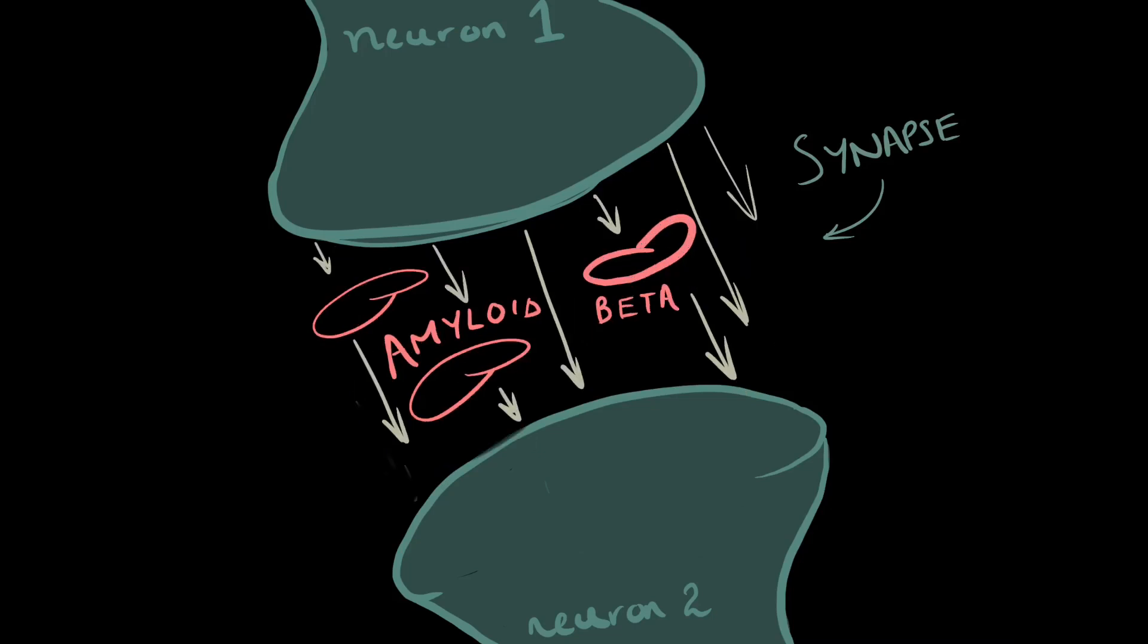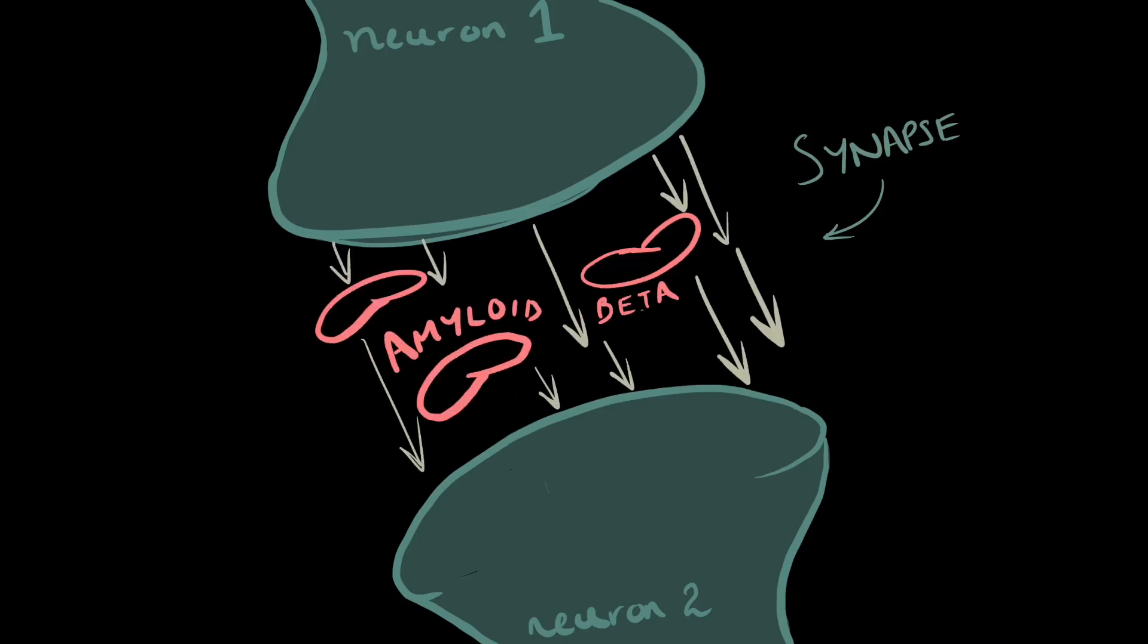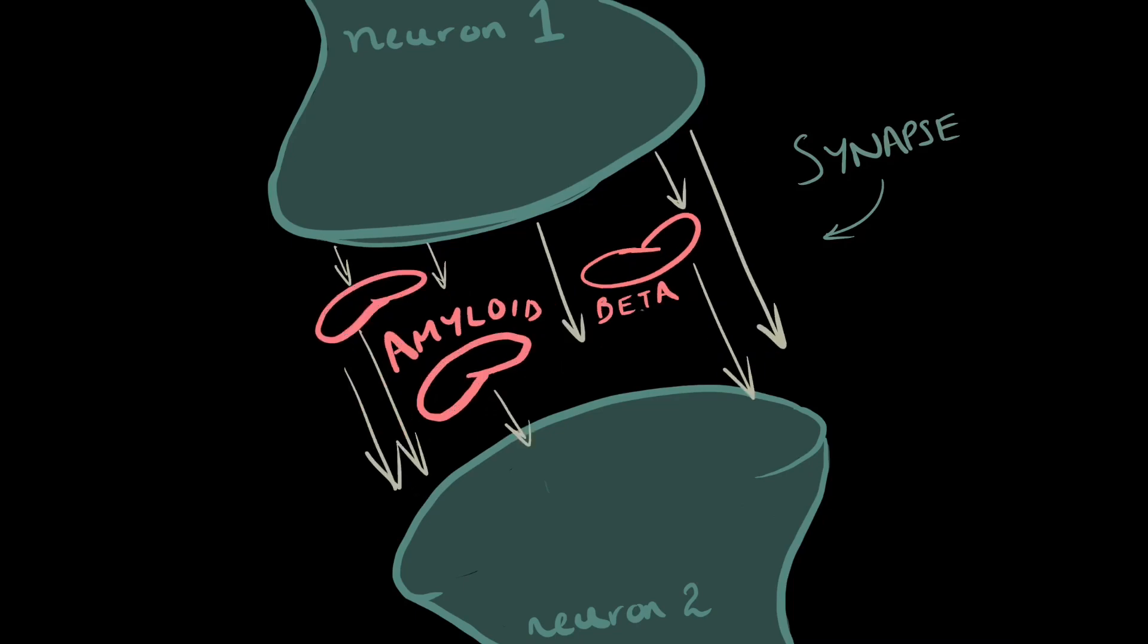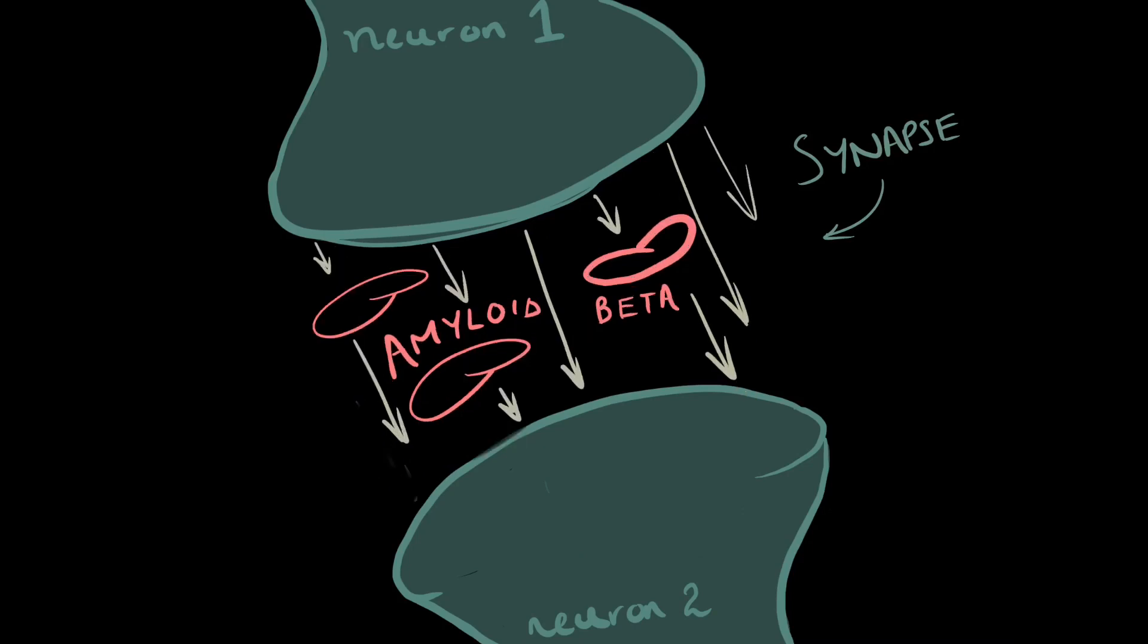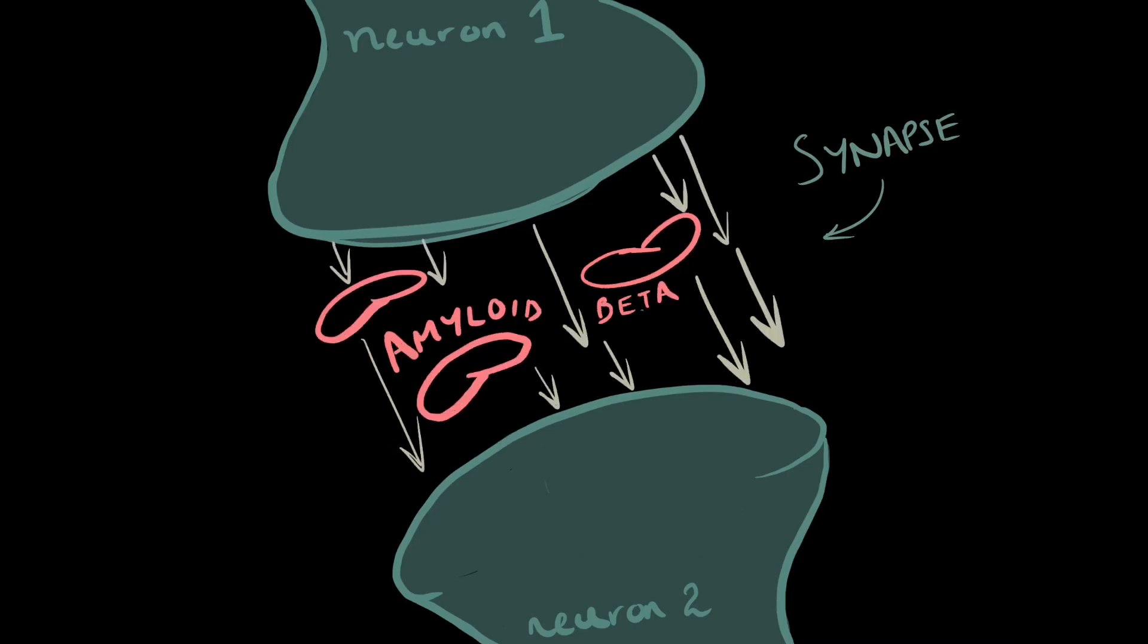In healthy brains, your brain cells, known as neurons, can transfer information through gaps called synapses. Amyloid beta protein might be present in the synapse, but it does not affect the transfer of information.